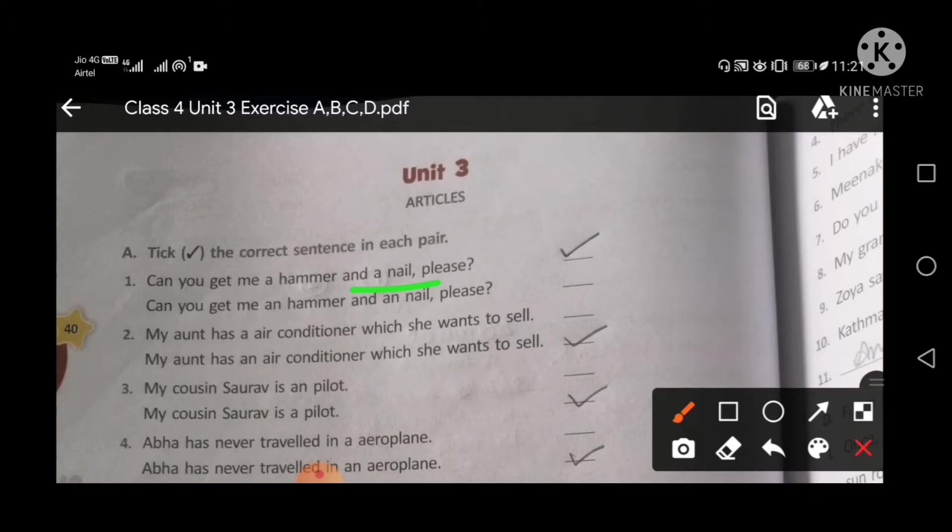Next, my aunt has an air conditioner which she wants to sell. My aunt has an air conditioner. Okay, because A is a vowel word. So we use an for this. So this one is right.